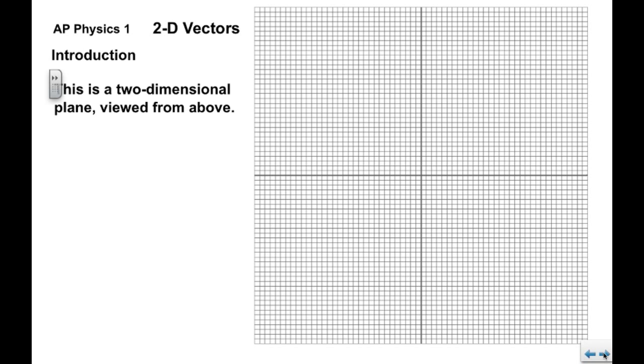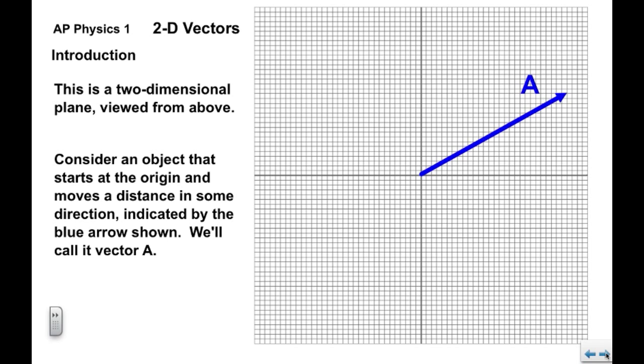So here's a two-dimensional plane viewed from above. You can consider this an XY plane. And we're going to consider an object that starts at the origin here and it moves some distance in some direction that's indicated by the blue arrow. We're going to call this vector A, capital A in this case.